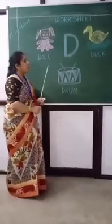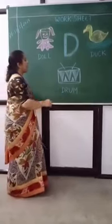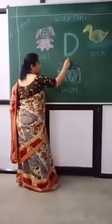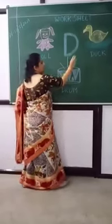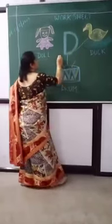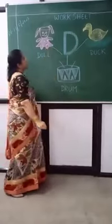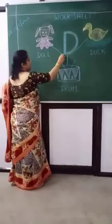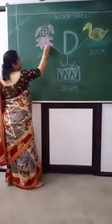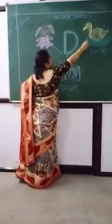Okay, so today we will be doing the worksheet. Now let's see. This is letter D — D for drum, D for duck, D for doll. I just joined the letter with the object: D for doll, D for drum, and D for duck.